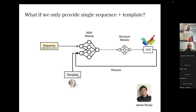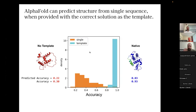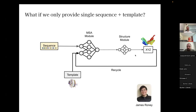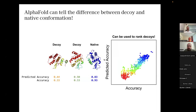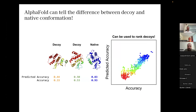Interestingly, if you actually provide the single sequence and the template information, it does pretty well. So if you give it the right solution, it's able to give you the right solution. The part that was really exciting was that if you give it intermediate solutions, it's actually able to rank the solutions correctly. These are decoys generated by Rosetta — passing decoys to AlphaFold as templates, it's able to tell you which is the right structure and which is the wrong structure. This seemed to outperform Rosetta itself and also models like DeepAccuracyNet from David Baker's group.